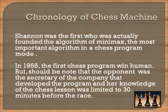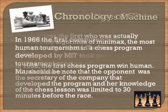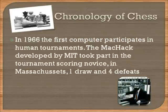In 1958, the first chess program won against a human. It should be noted that the opponent was the secretary of the company that developed the program, and her knowledge of chess was limited to 30 minutes of study before the match. In 1966, Mac Hack was the first computer to participate in human tournaments, taking part in a tournament in Massachusetts, scoring one draw and four defeats.